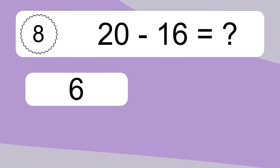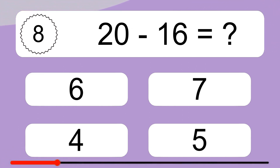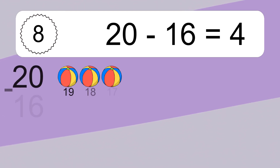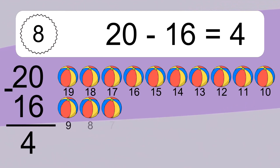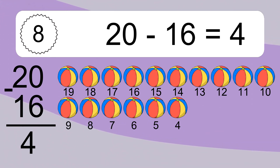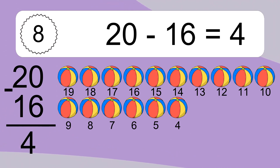20 minus 6 equals what? 20 minus 6 equals 14. Let's count it. 19, 18, 17, 16, 15, 14, 13, 12, 11, 10, 9, 8, 7, 6.